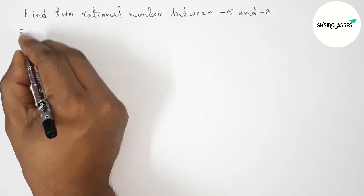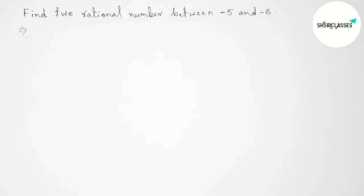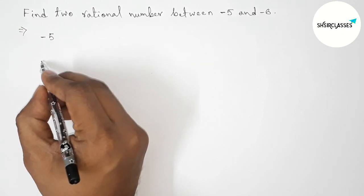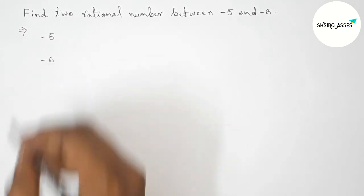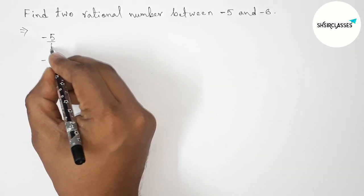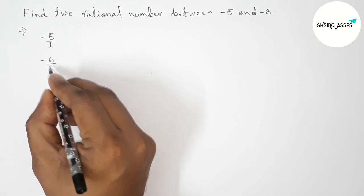First, let us solve this problem. Here we are given two negative numbers: -5 and -6. Write down -5 and -6. Now we can write -5 as -5/1.